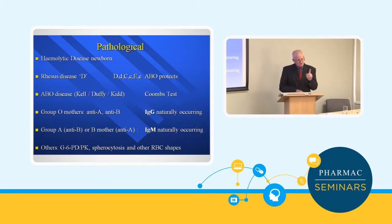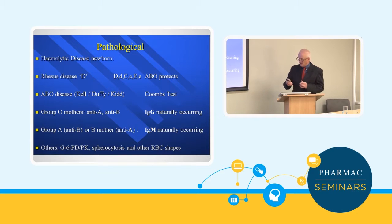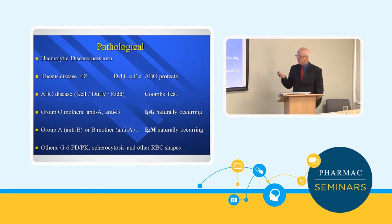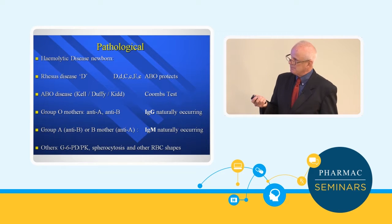The first symptom the mother in the Tauranga case noticed was that feeding was taking longer and longer — the baby was so breathless it wouldn't feed. That's a great flag for problems about to appear. If you have an ABO setup alongside Rhesus disease, there's a little bit of protection against the Rhesus disease, for reasons nobody quite understands. Now that Rhesus disease is largely treated, ABO disease is probably the most common cause of hemolytic jaundice we see.